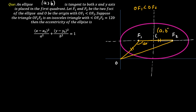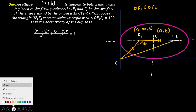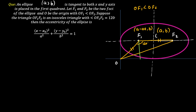Let the center of the ellipse be (a, b). Then the coordinate of F1 becomes (a minus ae, b). Drawing a perpendicular and letting this angle be theta — since the major axis and x-axis are parallel, the alternate interior angles give us theta in multiple places. The foot of the perpendicular drawn from F1 has coordinates (a minus ae, 0).